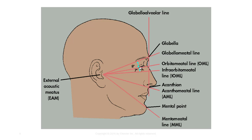Important radiographic landmarks include the orbitomeatal line, or OML, which extends from the outer canthus to the EAM. The infraorbital meatal line, or IOML, extends from the infraorbital margin to the EAM.